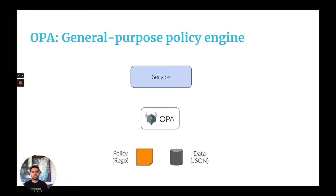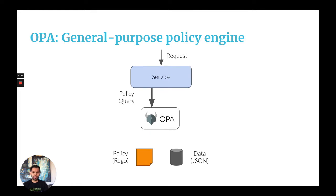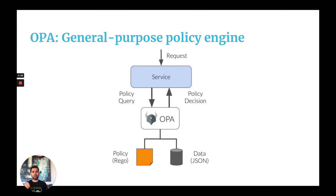Imagine you have a service — it can be any service at all: a Kubernetes API server, your own custom server, Kafka, Terraform, any service at all. Whenever your service gets a request, it's going to ask OPA for a policy decision by executing a query. OPA is going to evaluate this query based on the policies and the data it has access to, and send a decision back to your service where it gets enforced. So you can see that we have decoupled the policy enforcement from the policy decision-making.